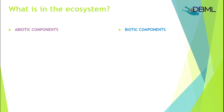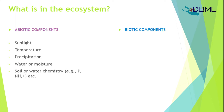There are two types of components in an ecosystem: abiotic and biotic. An abiotic component is any non-living aspect of the environment — sunlight, temperature, precipitation, water, soil, or water chemistry. These are all very important in the ecosystem and affect the organisms surviving in that area.